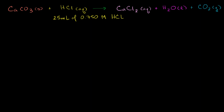What we want to do in this video is figure out the mass of calcium carbonate we need to react completely with 25 milliliters of 0.75 molar hydrochloric acid solution. We have the reaction here. We have this hydrochloric acid dissolved in water — it is an aqueous solution. The solvent is water, and 0.75 molar tells us the molarity, or the moles of hydrochloric acid per liter of solution. We need to figure out the mass of calcium carbonate required to react completely with this amount of hydrochloric acid solution.